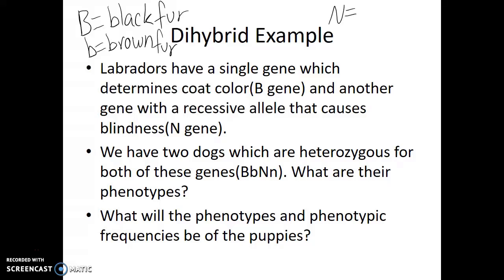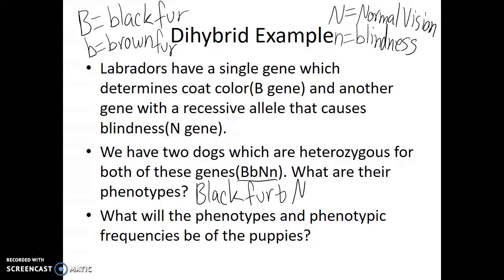There's also another gene, N, where the dominant normal copy of this gene results in normal vision. However, the mutated allele, little n, this is a recessive allele which could cause blindness. And so we have two dogs, which are parents. We're thinking of breeding them together to make puppies. Their genotype is that they are heterozygous for the B gene and heterozygous for the N gene. So what is their phenotype? What do they look like? Well, they have at least one copy of the dominant allele for the fur color, so they have black fur. And they have at least one copy of capital N, so they have normal vision.